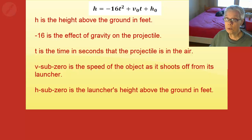v sub zero is the speed of the object as it shoots off from its launcher, and h sub zero is the height of the launcher above the ground. All the numbers in those positions have special meanings.